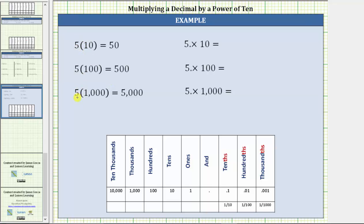The number 5 has a decimal point to the right, as shown here. For 5 times 10, we move the decimal point to the right one place. So beginning with 5, move the decimal point to the right one place to make 5 ten times larger. We have a missing digit here — we always replace missing digits with zeros, which gives us a product of 50. The reason this works is if we look at the place value chart below: the 5 is in the ones place value, and after moving the decimal point one place to the right, the 5 is now in the tens place value, which makes 50 ten times larger than 5.